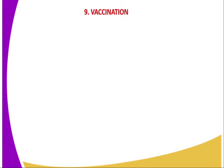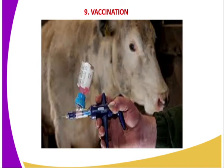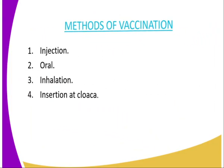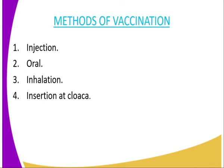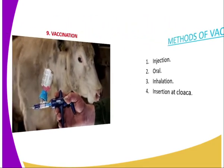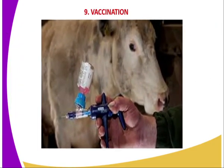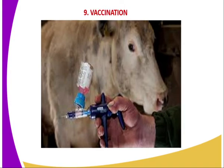Vaccination is another method of controlling the spreading of diseases. You can inject your animal with a particular vaccine to control the disease from spreading. The methods of vaccination include injection — as you can see in the diagram, the animal is injected using a vaccine.